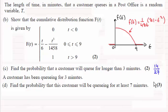Now in order to do this I've given you the answer to part C which we worked out in an earlier video and that came to 14 over 27. That was the probability that a customer will queue for longer than three minutes.